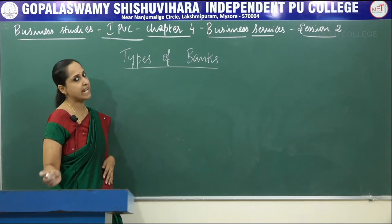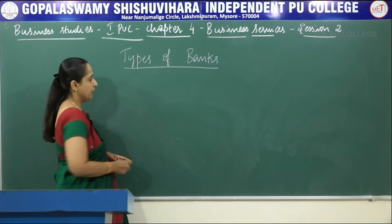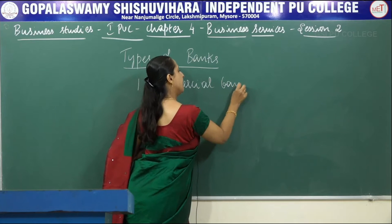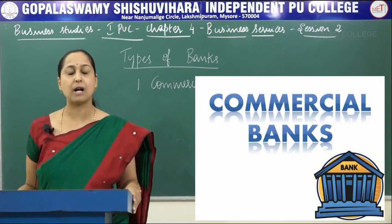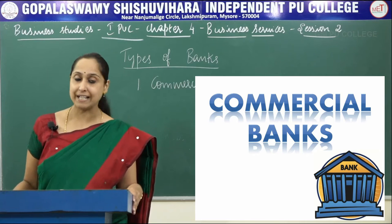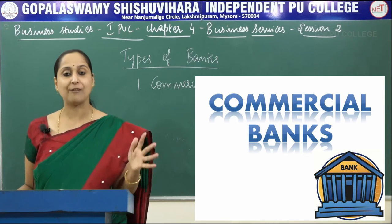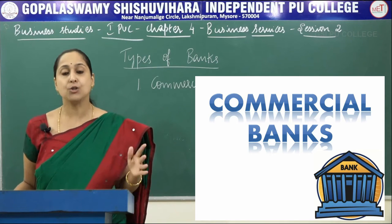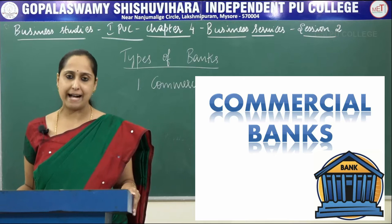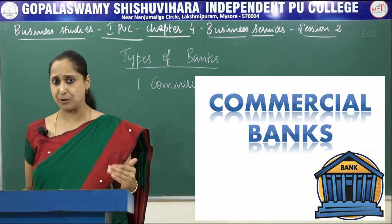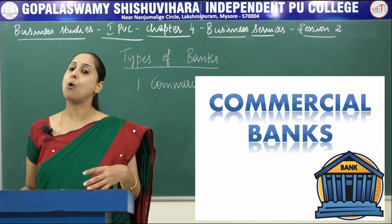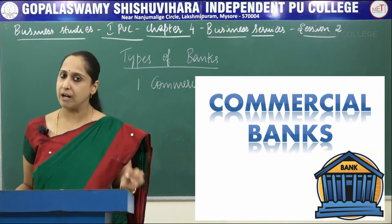Now let us see what are the different types of banks. There are four types of banks. The first one is commercial banks. Commercial banks are institutions which deal with money, and they are governed by the Banking Regulation Act, 1949. Commercial banks accept deposits from the public for the purpose of lending and investment, and they also lend money to the public.